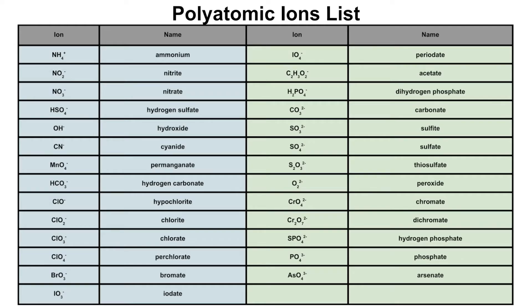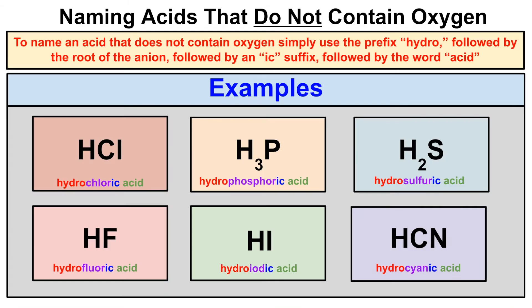Before we start writing and naming the chemical formulas for inorganic acids, it's important to have out a polyatomic ion list like the one you see right here, as well as your periodic table. Have those out while you watch this video and follow along so that it makes sense.